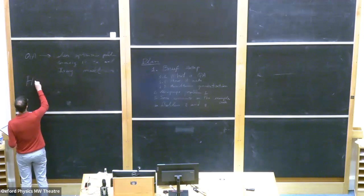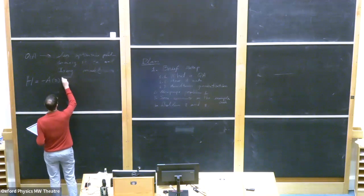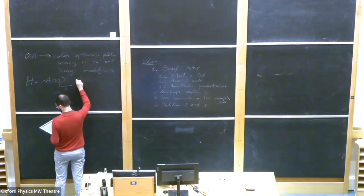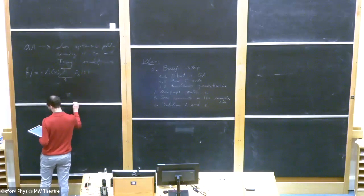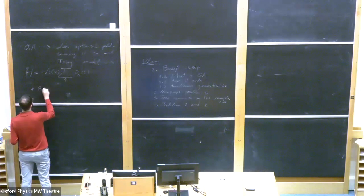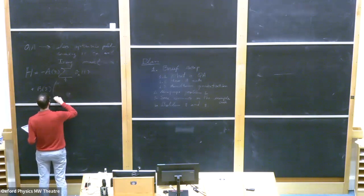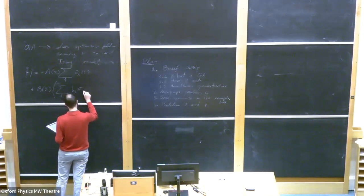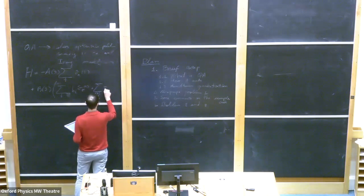There is an auxiliary Hamiltonian — a starting Hamiltonian — which depends on the Pauli matrix on a transversal coordinate. Then there is a second term with a coefficient B, and then there is the Ising model with h's and J's: the biases and the J couplings — sigma_z_i sigma_z_j.